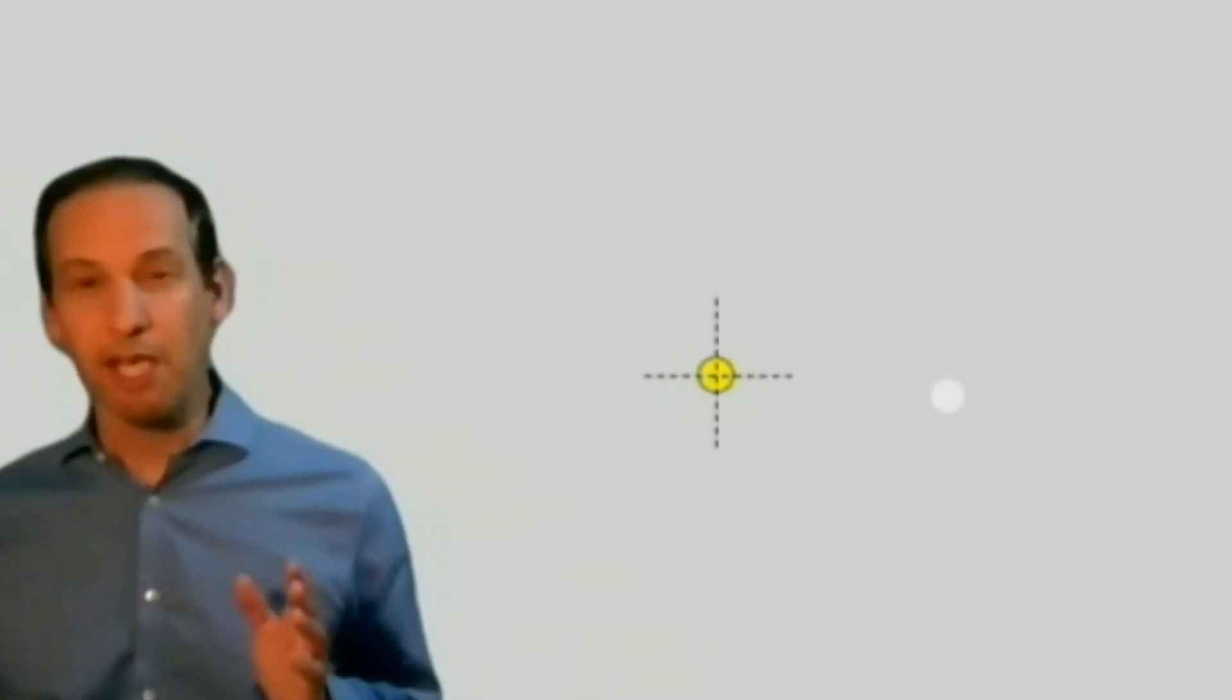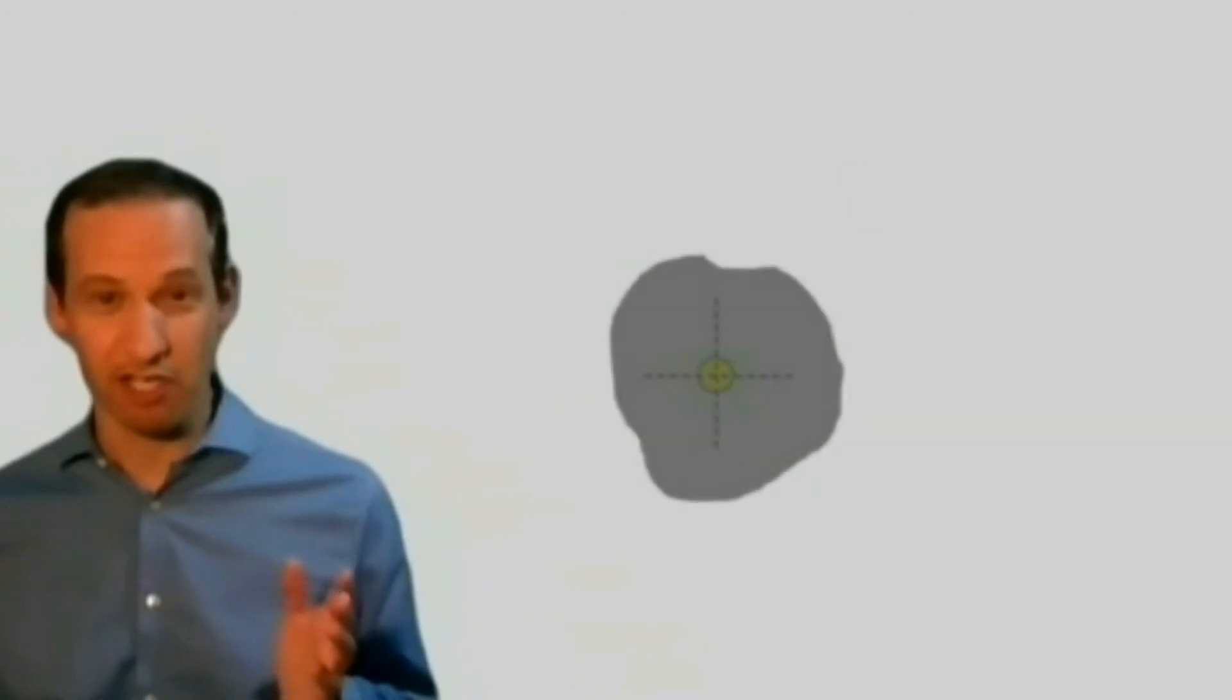But what if the patient's central vision is so poor that they can't see the central fixation target? The eye will continuously drift and this will greatly compromise the reliability of the visual field mapping.